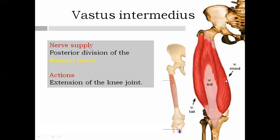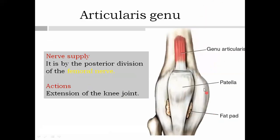The articularis genus muscle is said to be a detached part of the vastus intermedius. Its origin is from the lower part of the anterior surface of the shaft of the femur, and it inserts into the capsule of the knee joint. The nerve supply is the posterior division of the femoral nerve, and its action is extension of the knee joint.